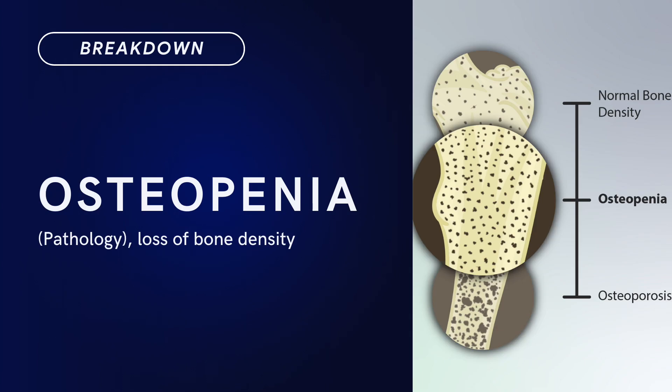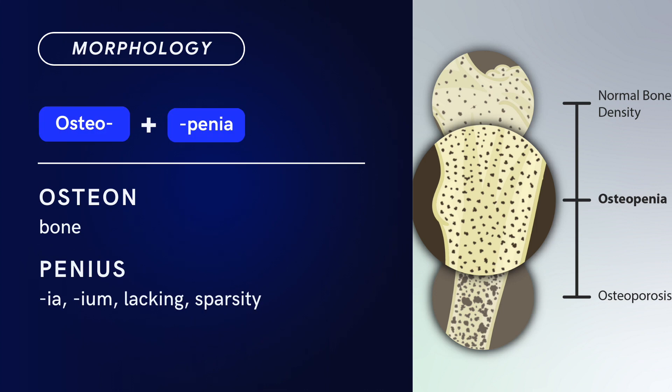Compound Term: Osteopenia. Brief Definition: Loss of bone density. Term Morphology — a compound of osteo plus penia. Osteo is derived from osteon, meaning bone, and penia — from penius, penia, penium — is an adjective meaning lacking and sparsity. There you have it: osteopenia.